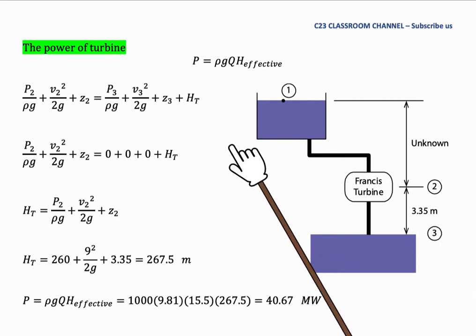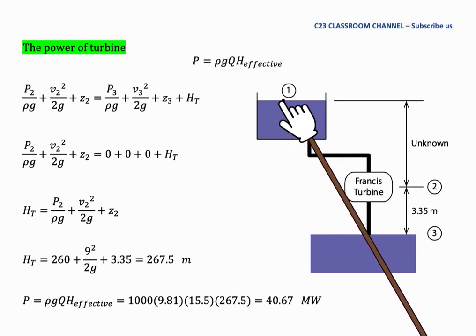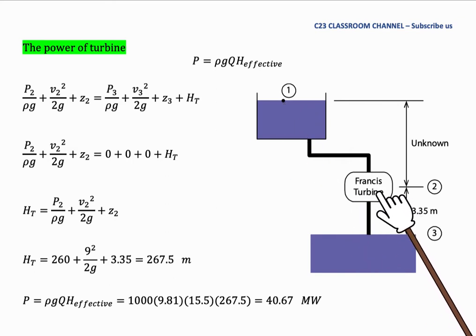And then if we have diagram like this, we could say that normally we point this level as point number one. And then we point the center point of Francis turbine as point number two. And the water level at the outlet here is point number three. From the question, we know that the distance from two to three is 3.35 meters. However, we do not know what is the distance between point number two, the center of Francis turbine, to the water level here.